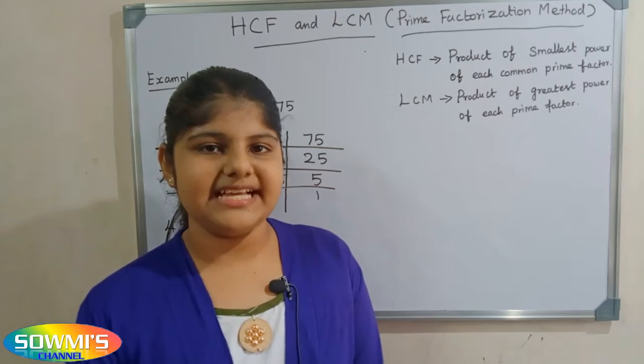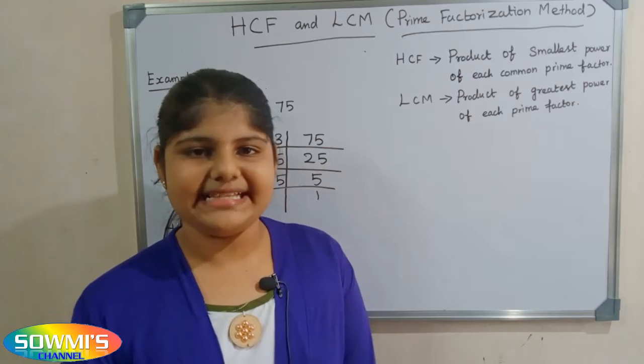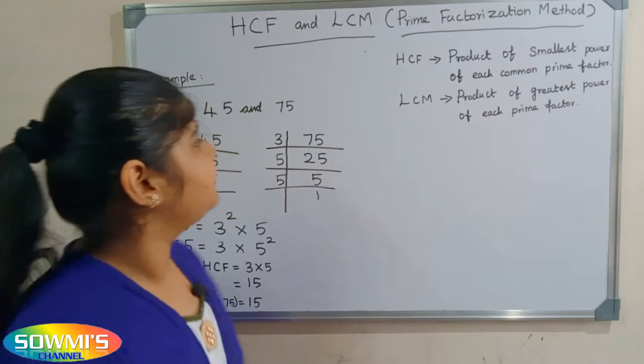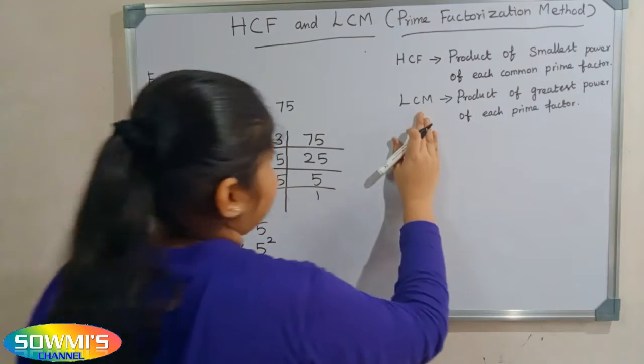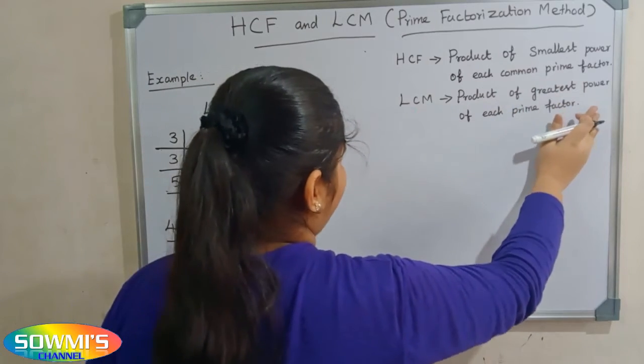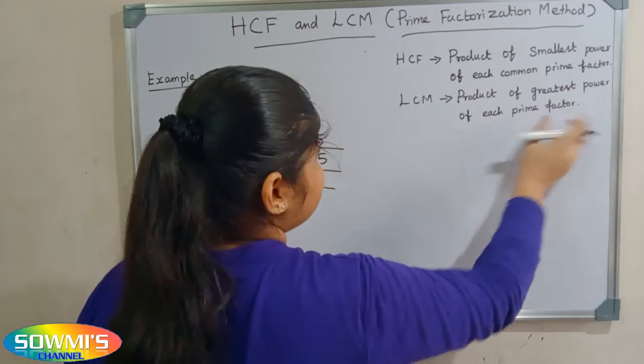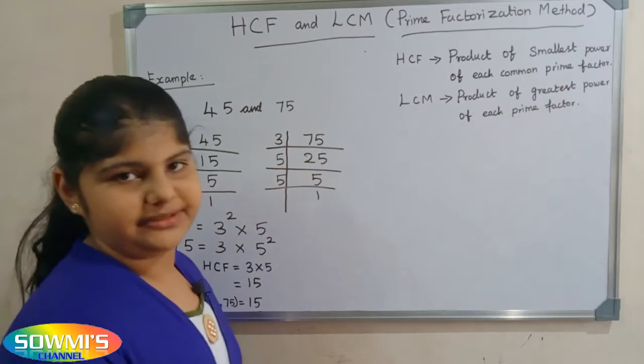Next we will find LCM. LCM is the product of the greatest power of each prime factor.